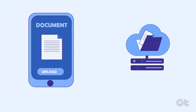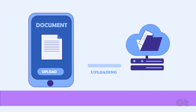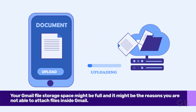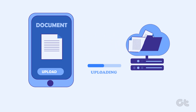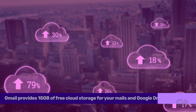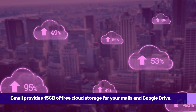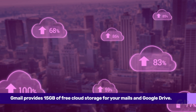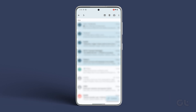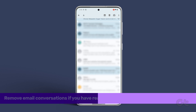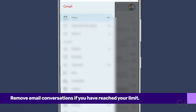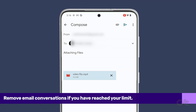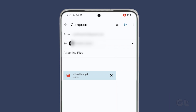The next thing to do is to check your Gmail cloud storage. The reason you are not able to attach files in Gmail might be because you have exhausted the storage limit on your Gmail account. Gmail provides 15GB of free cloud storage for your mails and Google Drive. So if you have reached your storage limit, you need to remove some email conversations from your inbox to free up some space. Once you have done that, try attaching the files again to see if it works.